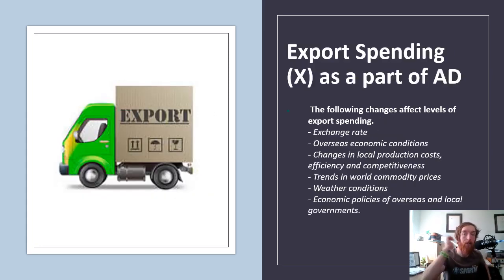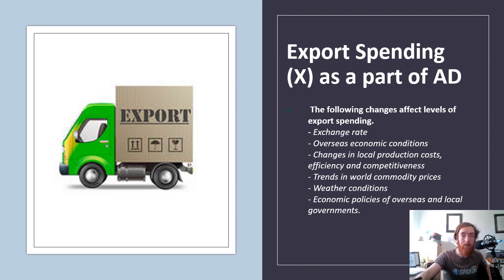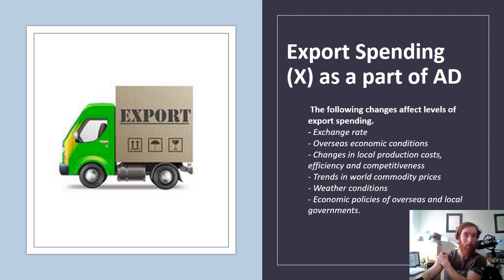Things that change export spending: the exchange rate — currently our exchange rate is quite low, which makes our exports cheaper to overseas countries. Overseas economic conditions — because of COVID, our exports aren't selling as much because countries have slowed down. Changes in local production costs, efficiency, and competitiveness — the cheaper your production costs, the more competitive and likely to export you are. Trends in world commodity prices, weather conditions, and economic policies of overseas and local governments — for example, China put 80% tariffs on our barley, making it much harder to trade.